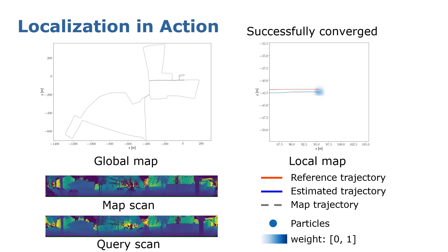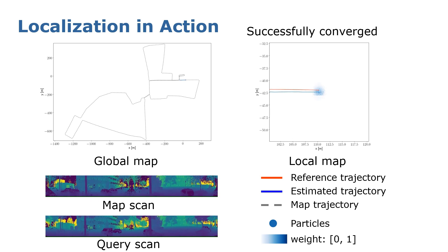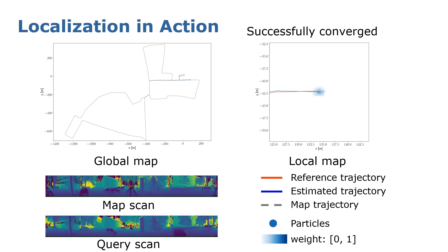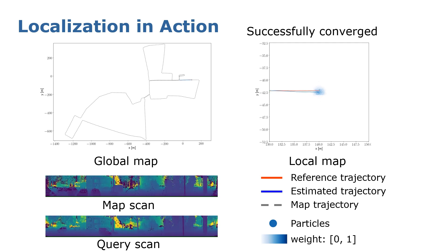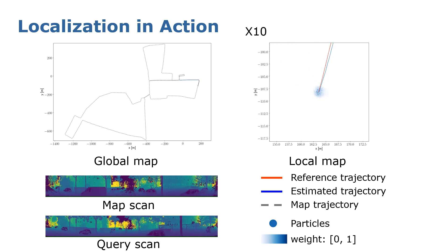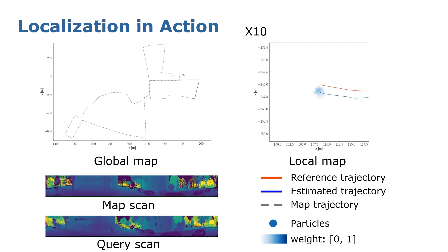In the lower part, we show the current query scan and the map scan of the estimated location. The red line represents the reference trajectory, and the blue line represents the estimated trajectory. The blue dots represent the particles, and the darker the blue, the higher the weight of that particle.